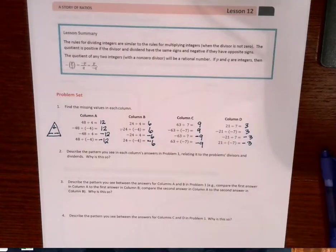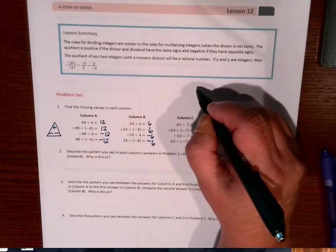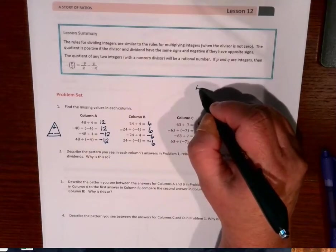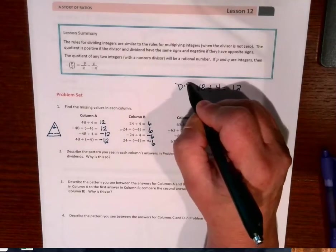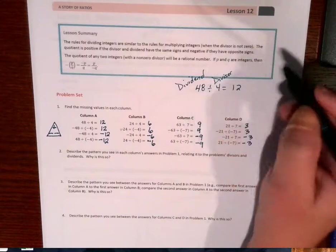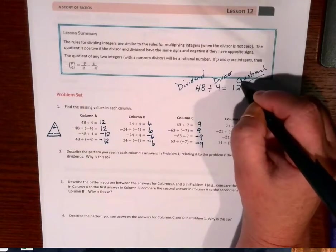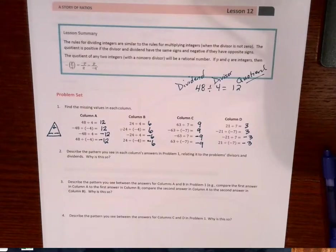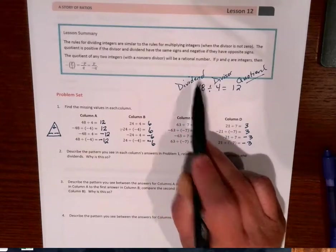So it's asking me to describe the pattern you see in each column's answers in problem 1. So what we are just talking about is that when the divisor and the dividend... This is my dividend, this is my divisor, and this is my quotient. So just remember that that answer has a different starting letter. The other two are both D words for divide, dividend. You can see the word divide in it, and divisor.